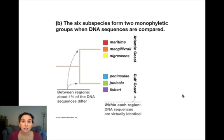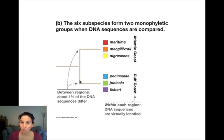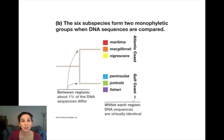That's the topic for this video. In the next video, I'm going to talk about how these two species — the Atlantic coast and Gulf coast seaside sparrows — became different from one another. What happened? How did speciation occur in this group of organisms? We're going to talk about mechanisms of speciation. Take care.